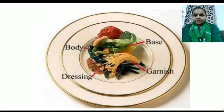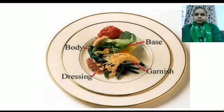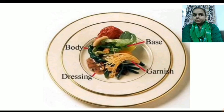First is base — base of any lettuce leaves. Second is body — any types of green cucumbers or any parsley. These are the dressing; parsley is used in the dressing. And garnish is the last ingredient of the salad.